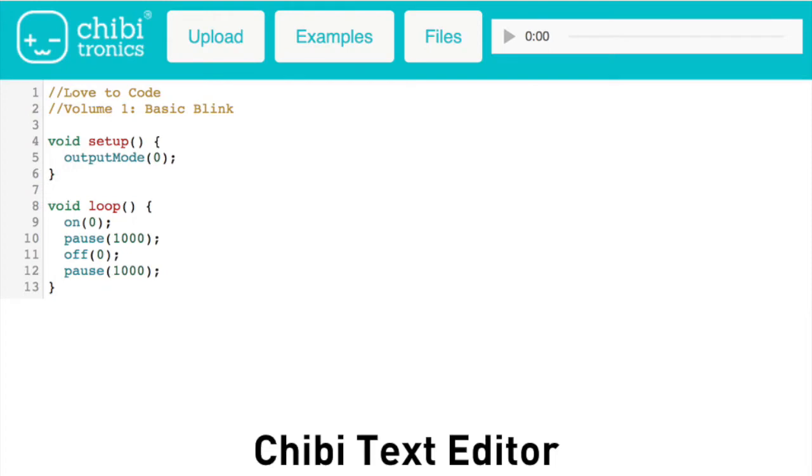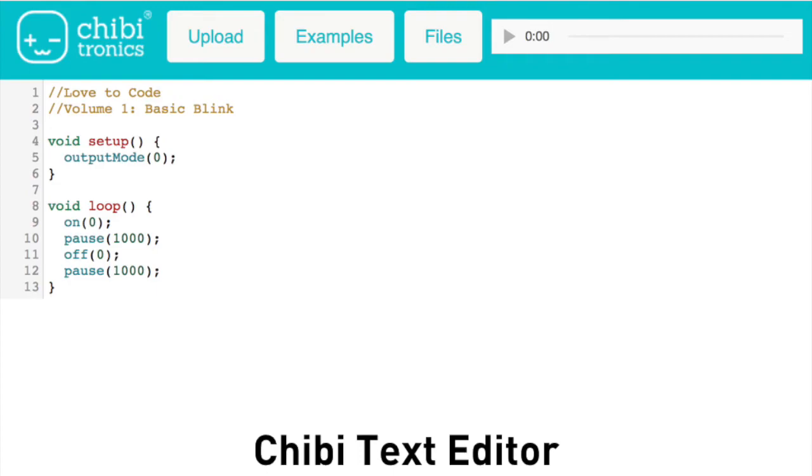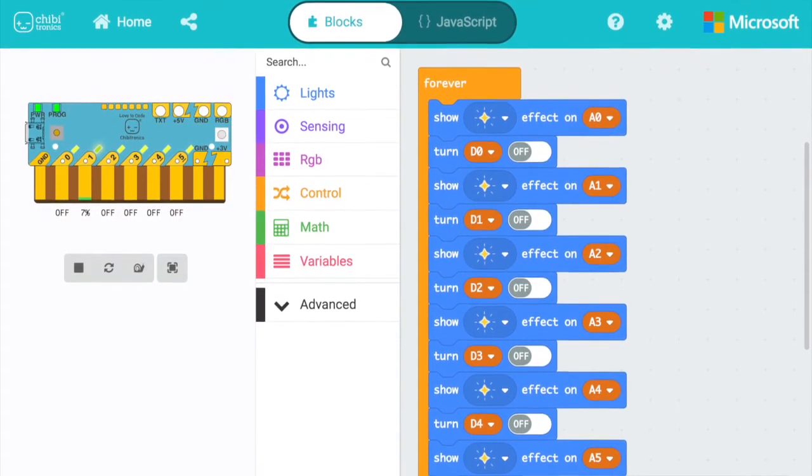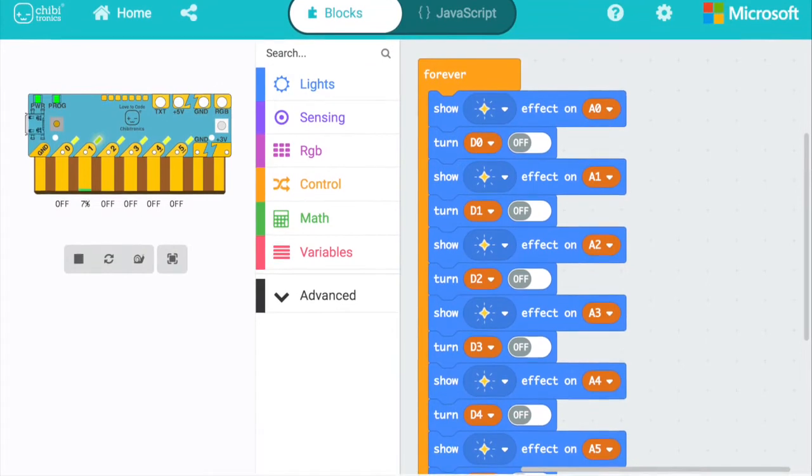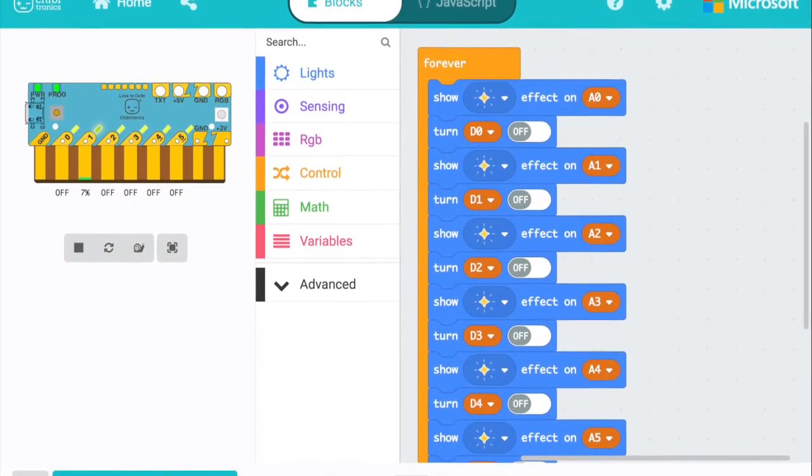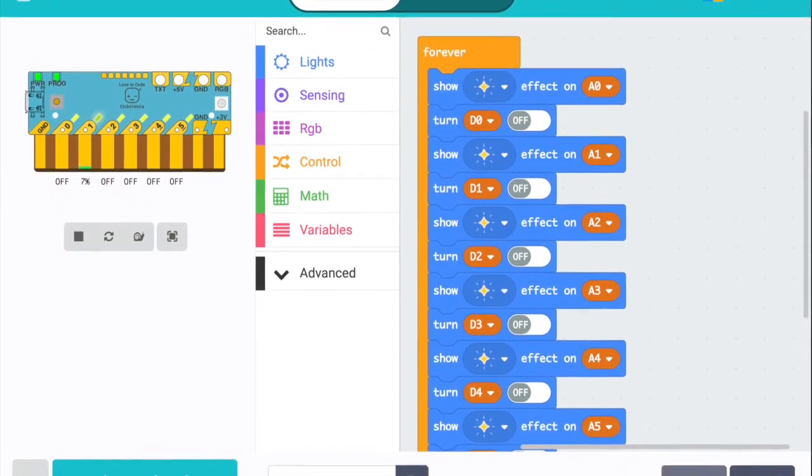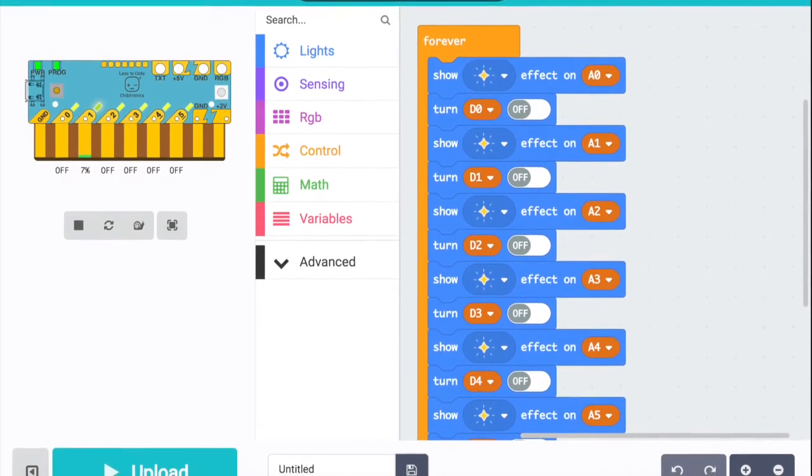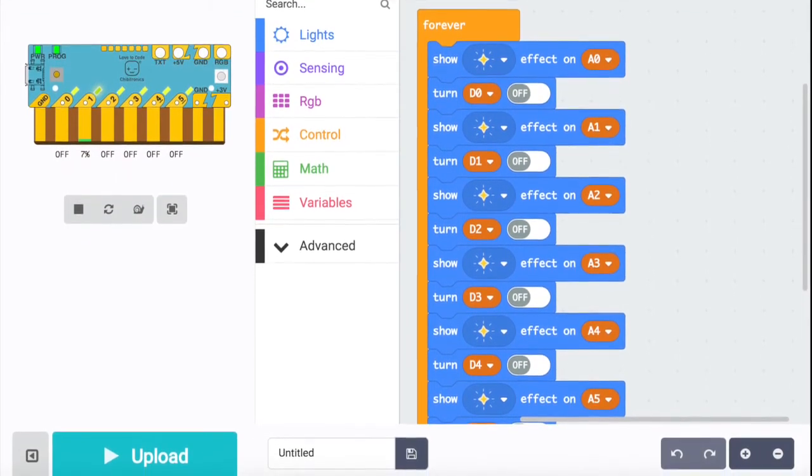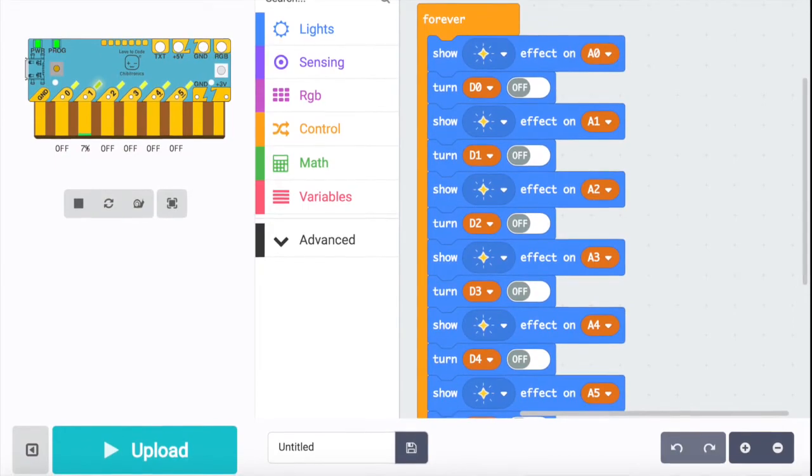To write your program, you don't have to download or install any software. You just have to go to our website. We've created various editors based on whatever language you like. For example, if you already know how to use Arduino, you can use this language to write your code. We also created a simplified version that's easier to read for beginners. Finally, we have a block-based visual programming language called Microsoft MakeCode. This programming language allows you to drag and drop blocks like Legos and click them together to write your program. It even has this awesome simulator on the left that lets you preview what your code does.